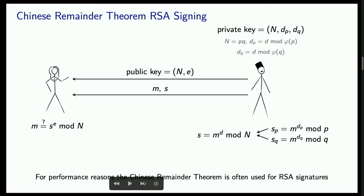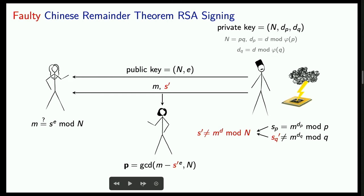This CRT approach is more efficient and is what is used in practice. However, it introduces severe problems if Bob makes a mistake while computing either part of the signature. If he makes a mistake computing the part modulo Q, he generates a faulty signature that is congruent to the correct signature modulo P but not modulo Q. This means an eavesdropper who sees the message and the faulty signature can do a simple GCD calculation to recover P and thereby get Bob's private key.